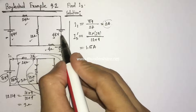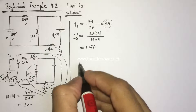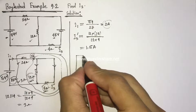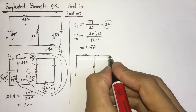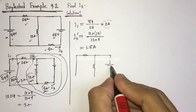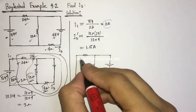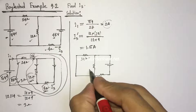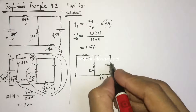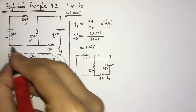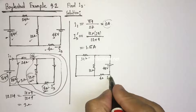Now let us consider the effect of the 48-volt voltage source. The equivalent circuit shows: a 24-ohm resistor, a 12-ohm resistor, a 4-ohm resistor, current I3, and 48 volts — the 54-volt source is short-circuited here. Let the current be I3 double prime.